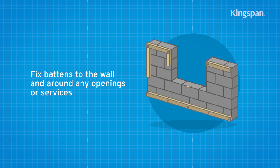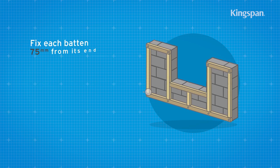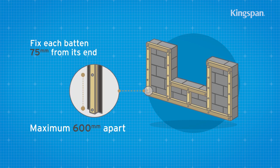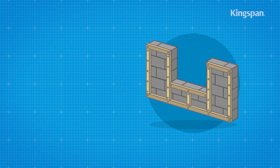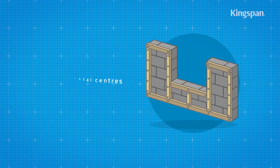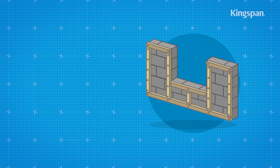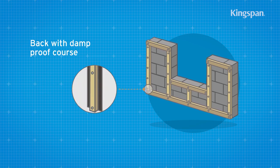Then fix further battens to the wall and around any openings or services. Fix each batten approximately 75mm from its end, at no more than 600mm horizontal centres. Each batten should be treated softwood and backed with a strip of damp-proof course.